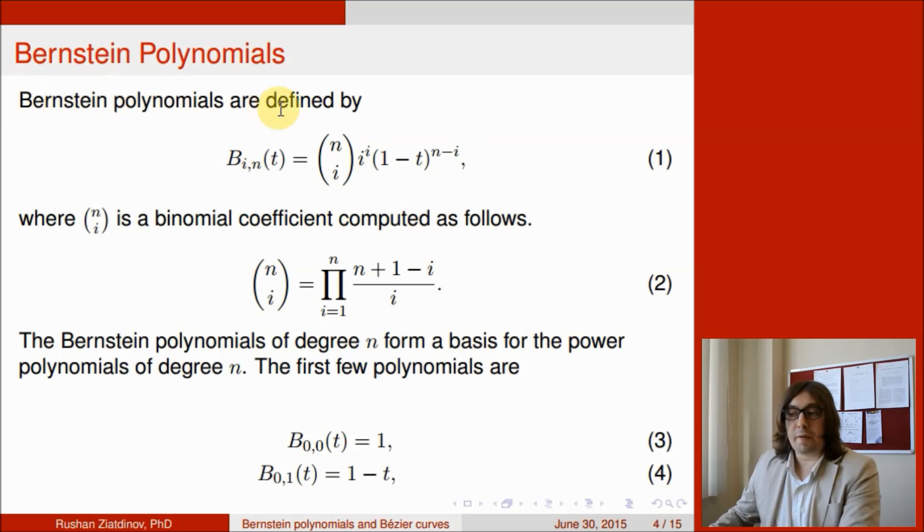Bernstein polynomials are defined by Formula 1. Here this expression is a binomial coefficient computed as shown in Formula 2, in terms of product. The Bernstein polynomials of degree n form a basis for the power polynomials of degree n. The first few polynomials are given below.